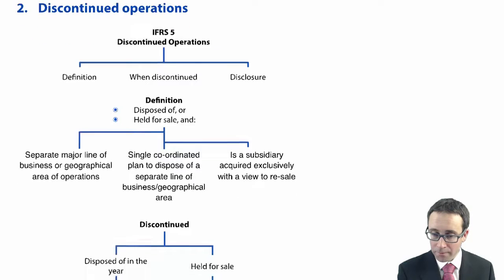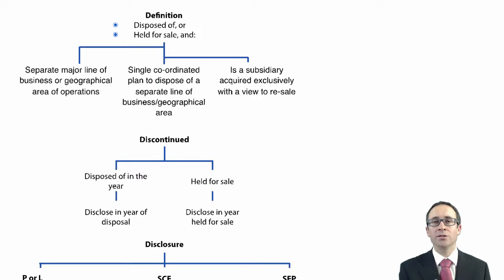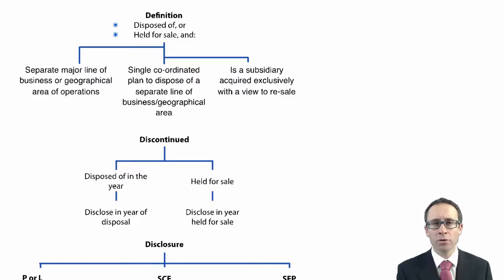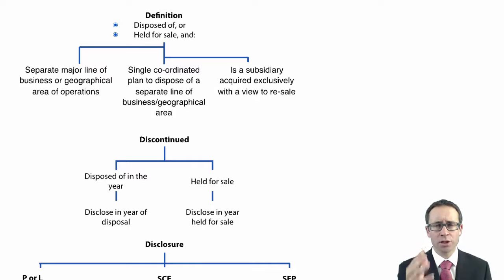Let's go through number one and look at the definition. What IFRS 5 aims to do is encourage earlier disclosure to give users of the accounts more information about the intentions of management with regards to a particular operation. An operation is discontinued if it has been disposed of — once something is sold or closed down and ceases operating, it is technically a discontinued operation and you make the separate disclosure.